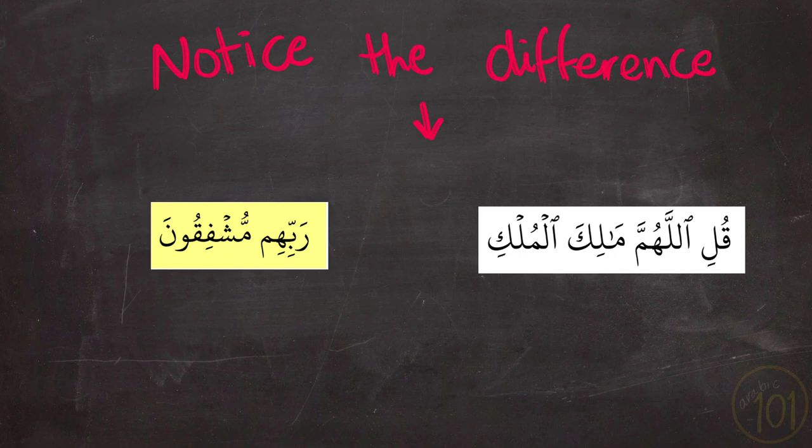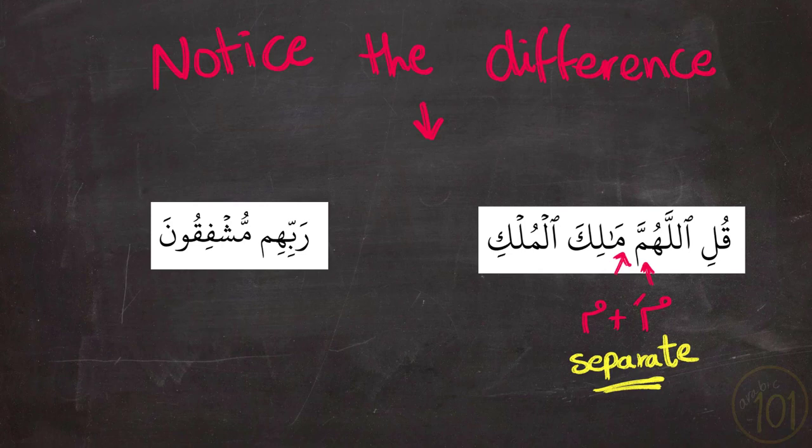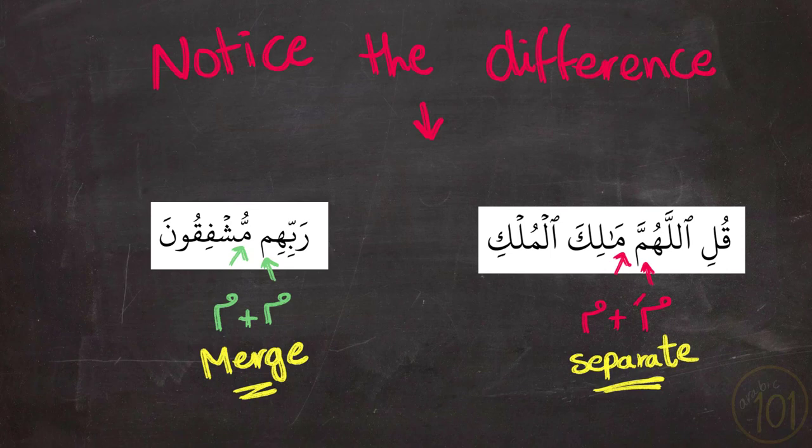Here is exactly the same story. When the Meem has a vowel, you will pronounce it separately, even if it is followed by another Meem. But when Meem Sakina comes first and is followed by another Meem, you will merge them into one single Meem.